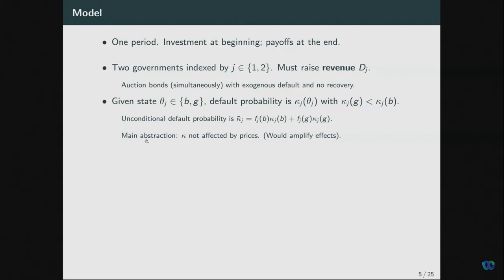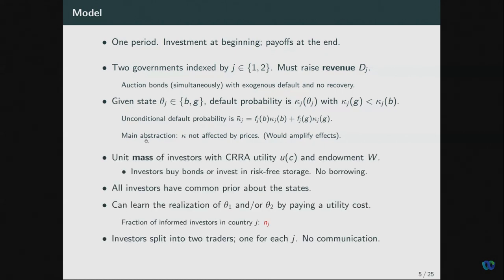A unique mass of investors with standard CARA utility have some endowment and a portfolio problem: how much to invest in risky bonds that can default, or in risk-free storage. All investors have common priors about the states in each country, but through endogenous information acquisition, they can learn the realization of the state in each country — or in both, if they want — by paying some utility cost. We call the fraction of informed investors in country J by N_J, which determines the extent of asymmetric information in that country.